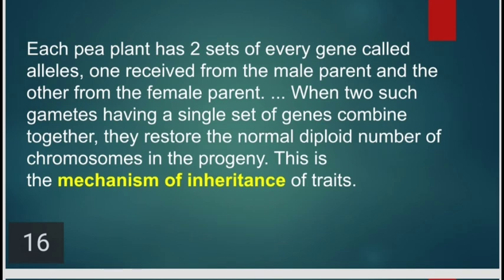Each pea plant has two sets of every gene called alleles — one received from the male parent and the other from the female parent. When two such gametes, each having a single set of genes, combine together, they restore the normal diploid number of chromosomes in the progeny. This is the mechanism of inheritance of traits.